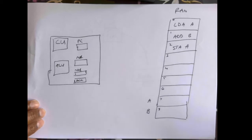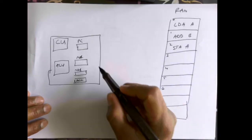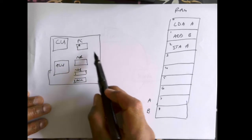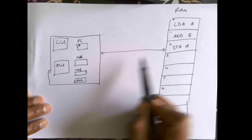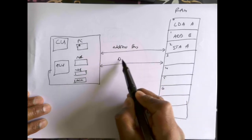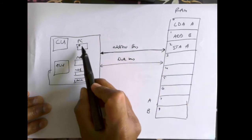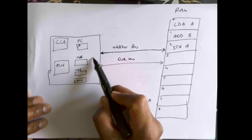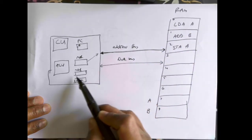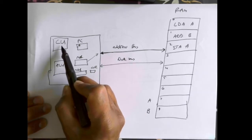Let's look at the normal standard fetch-execute cycle. When the CPU starts executing instructions, we copy the address of the first instruction into the program counter, so the program counter is going to hold zero. We've got two buses — the address bus and the data bus. That zero gets copied into the MAR, the MAR copies it onto the address bus, we go into RAM, fetch that instruction, it comes down the data bus into the MDR, and from the MDR we go into the CIR.